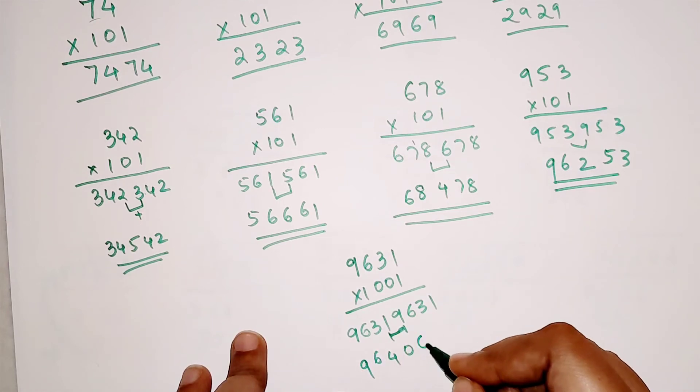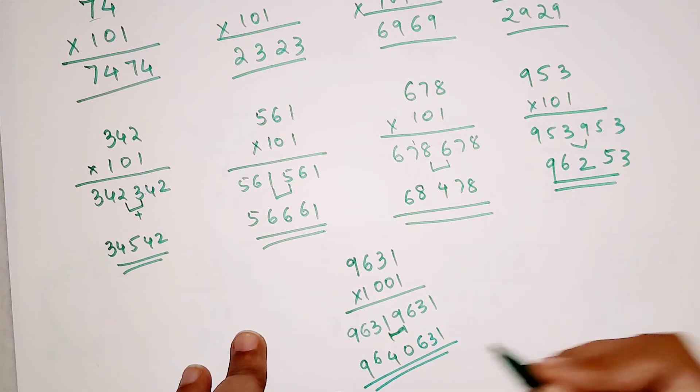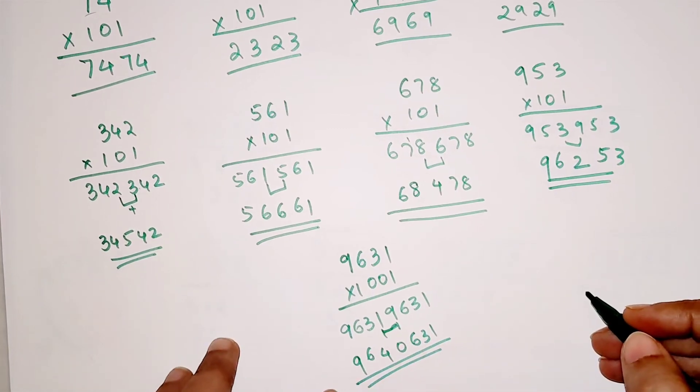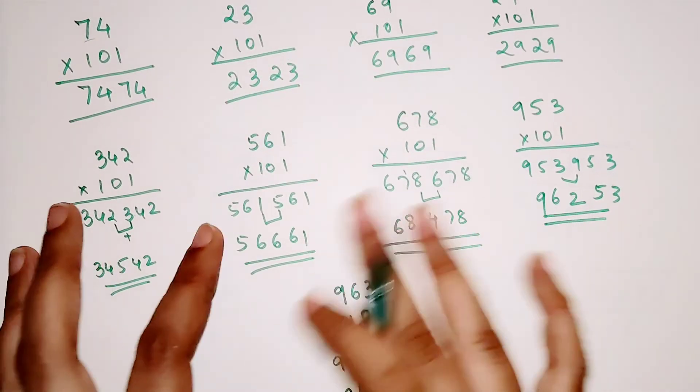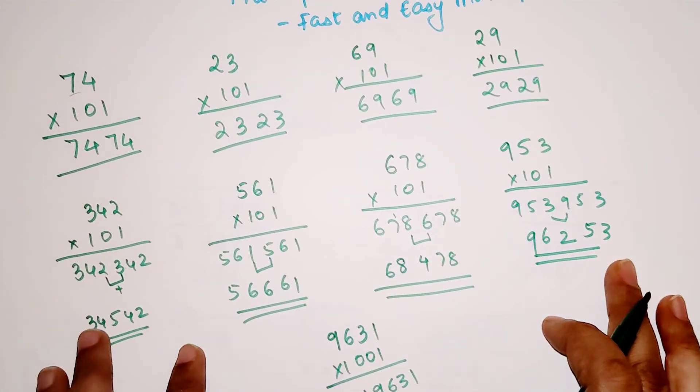And 6, 3, 1 are also written as it is. So that is your answer. I hope you all are getting how easy these kind of multiplication tricks happen.